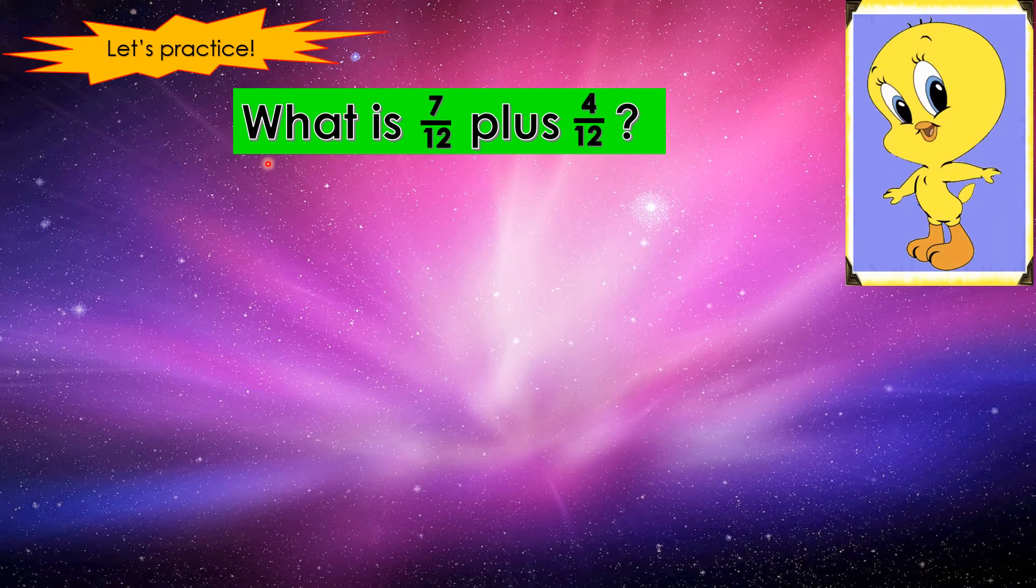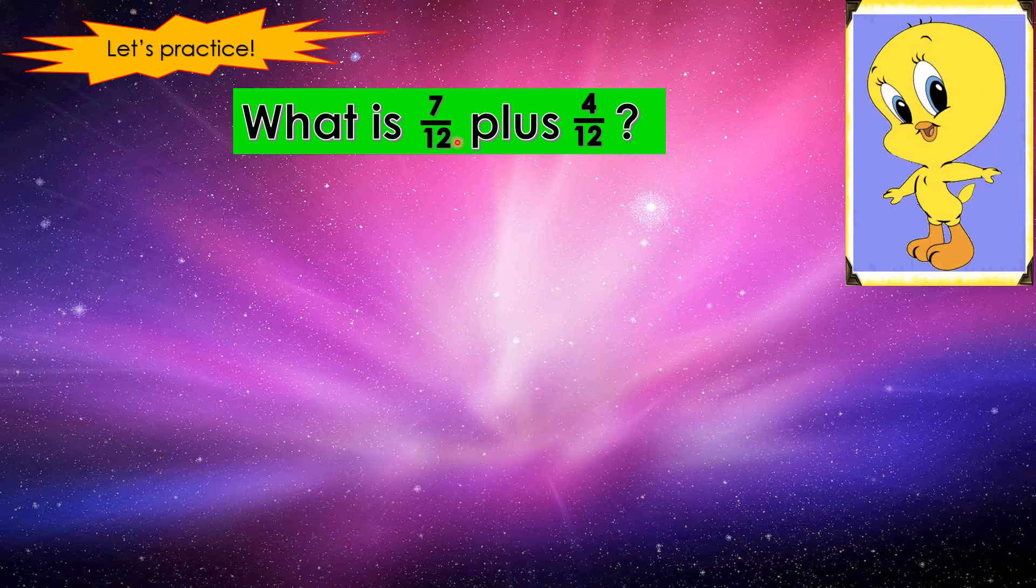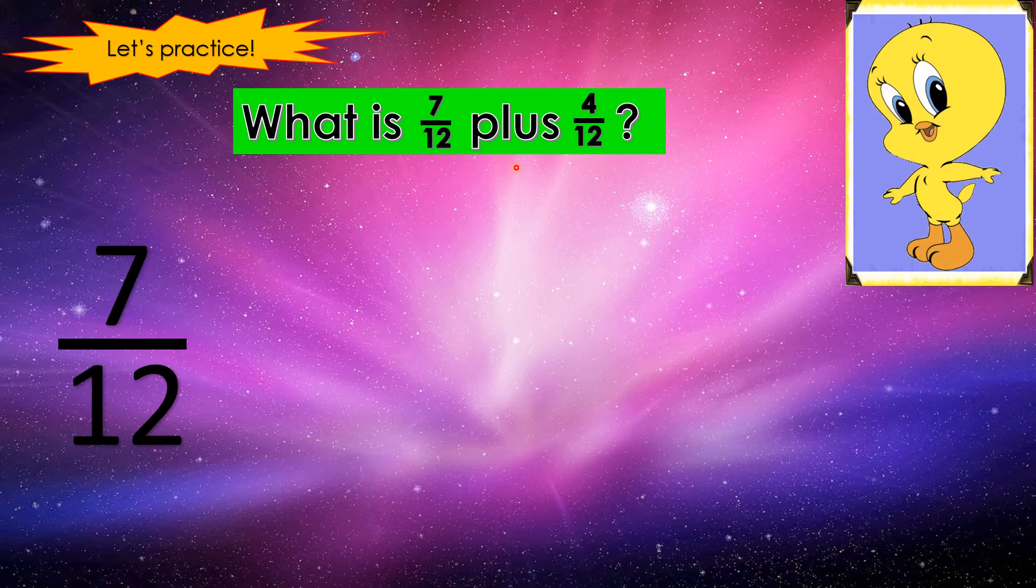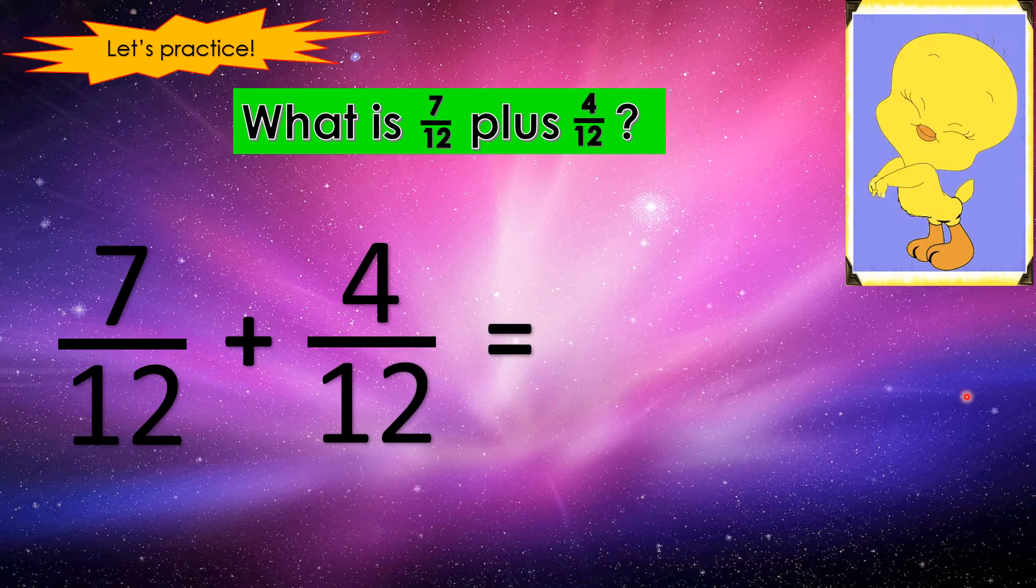Alright! Let's practice. What is 7 twelfths plus 4 twelfths? Okay! Let's solve for it. 7 twelfths plus 4 twelfths equals? Can you guess?